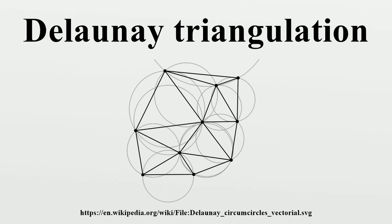As mentioned above, if a triangle is non-Delaunay, we can flip one of its edges. This leads to a straightforward algorithm: construct any triangulation of the points and then flip edges until no triangle is non-Delaunay. Unfortunately, this can take O(n²) edge flips and does not extend to three dimensions or higher.